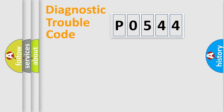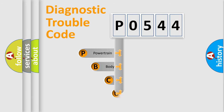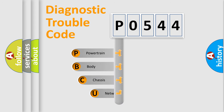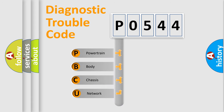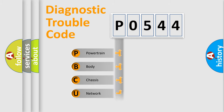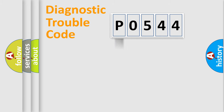First, let's look at the history of diagnostic fault code composition according to the OBD2 protocol, which is unified for all automakers since 2000. We divide the electric system of automobile into four basic units: Powertrain, Body, Chassis, and Network.